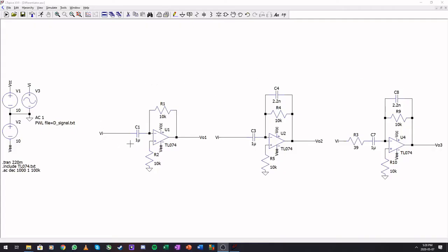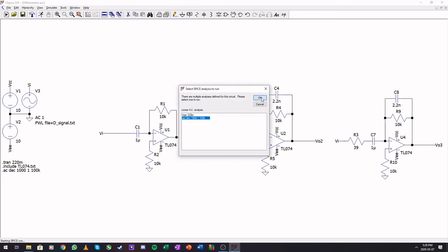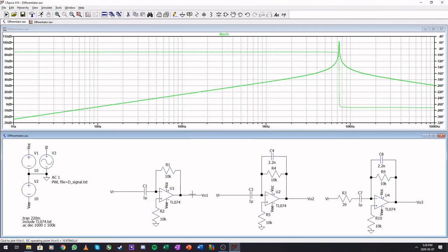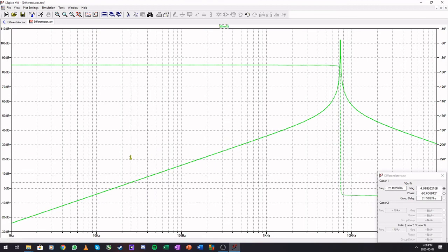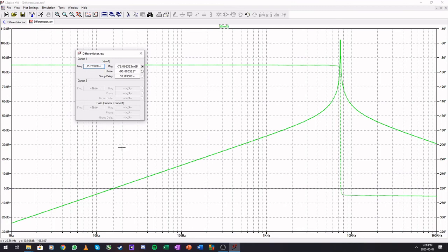I set up our differentiator and then the two practical cases, so we improved with a zero added and then with gain limiting. Let's start off by checking out the Bode plots. If we run the Bode plot on the first one and open a cursor, if we go here to the zero dB point, we will see that we do have our 16 hertz as designed.